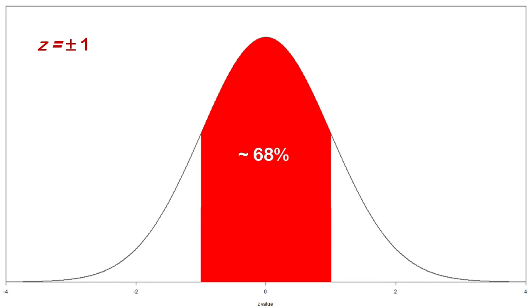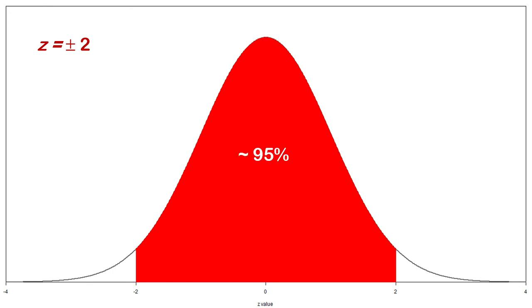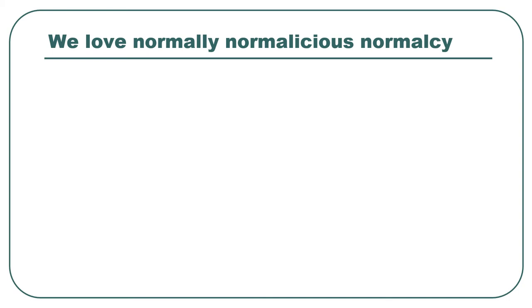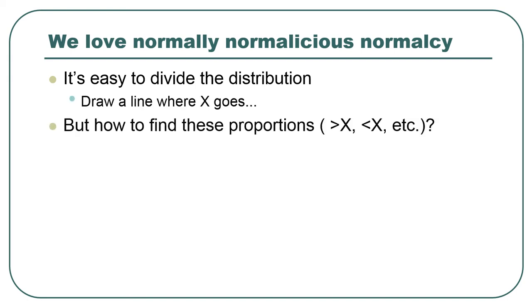Plus or minus 1 z-score is always 68% of the distribution. If you start from the mean and measure one z-score up and down, the area defined is 68% of the distribution. Plus or minus 2 standard deviations always gives you about 95% — exactly 95% requires 1.96, not 2, but it's pretty close. And 3 standard deviations gives you about 99.7%.